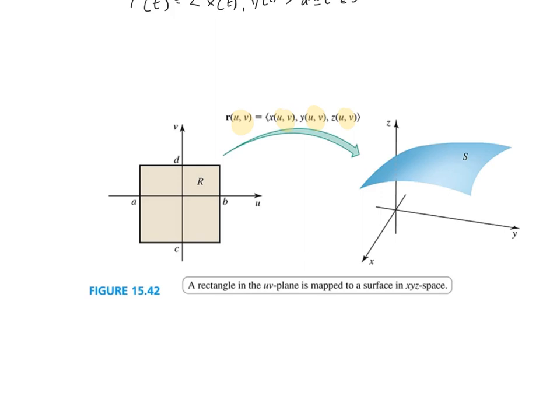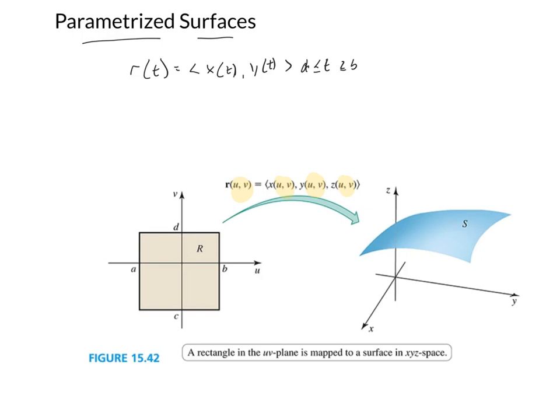Hopefully that makes a little bit of sense. If I only have one parameter T, I have points on a line moving to some X, Y, Z component in space. When we have two parameters U and V, we're moving those U, V coordinates to some point in three-dimensional space.